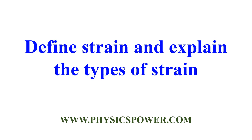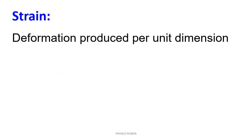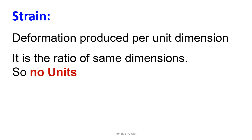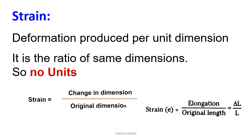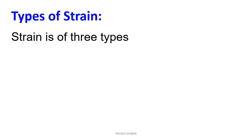Define strain and explain types of strain. Strain is the deformation produced per unit dimension. Simply, it is the change in dimension by original dimension. Mathematically, it is the ratio of the same dimensions, so strain has no units. Change in dimension divided by original dimension defines strain. For a wire along its length, if we apply force, the change in strain is elongation divided by original length — change in length by original length.